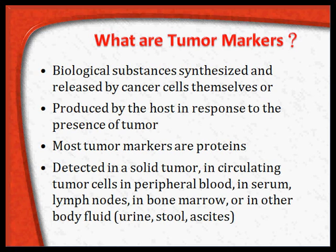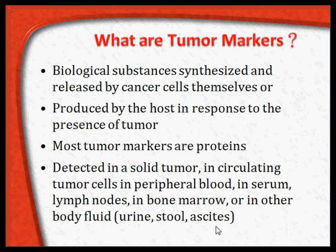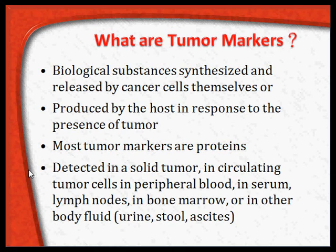Most tumor markers are proteins detected in a solid tumor or in the circulating tumor cells in the peripheral blood, or in the serum, lymph nodes, bone marrow, or any other body fluid such as urine, stool, or ascites. But remember that most of the tumor markers can be tested in the serum itself; some require solid tumor sampling and others may require urine and ascitic fluid, but the majority are detectable in the serum.